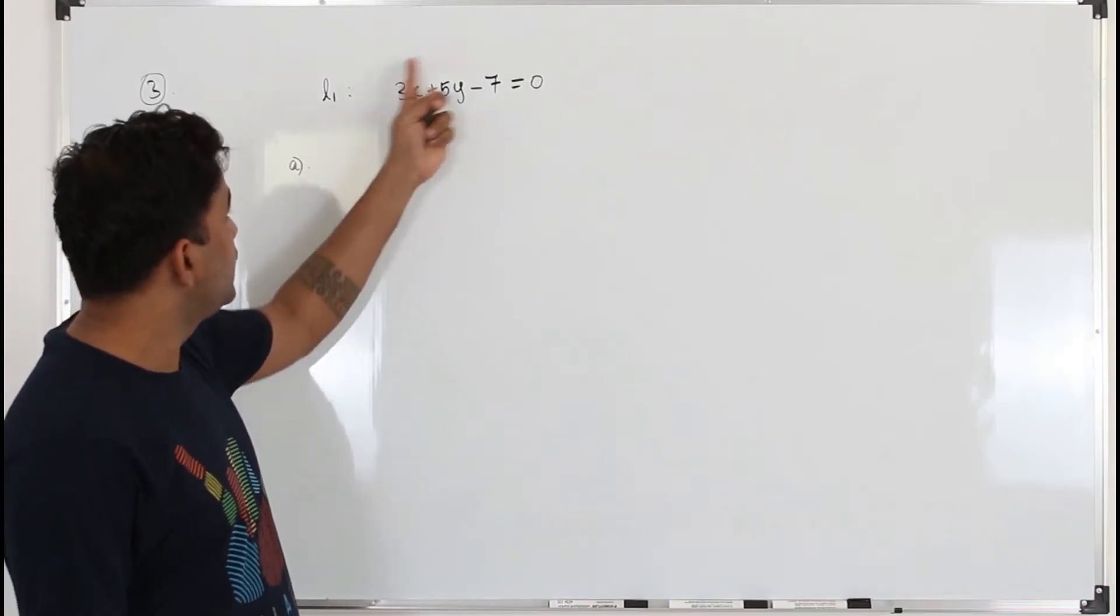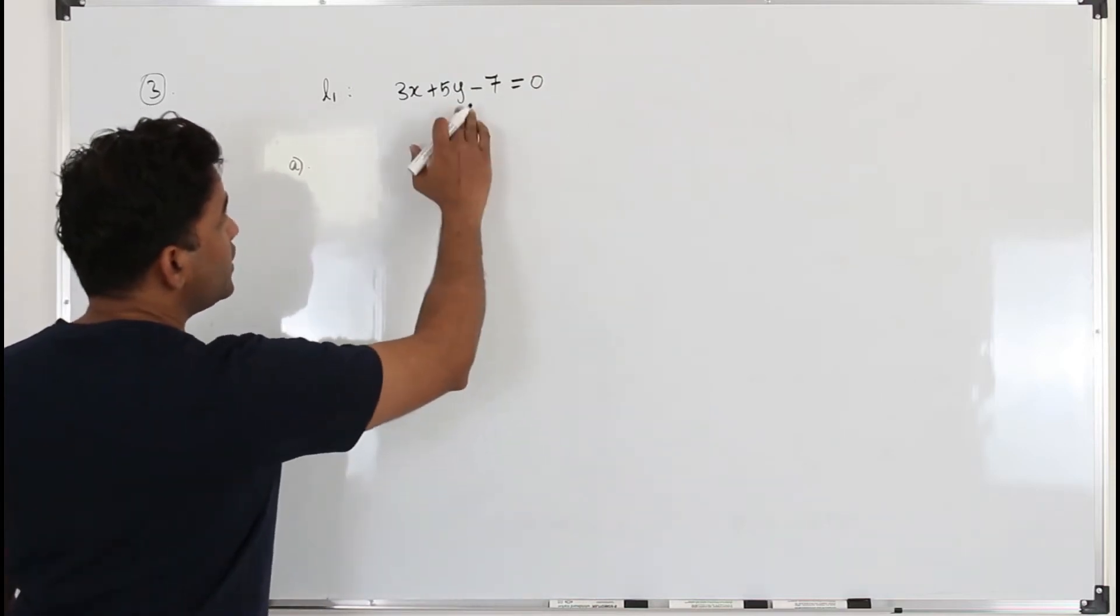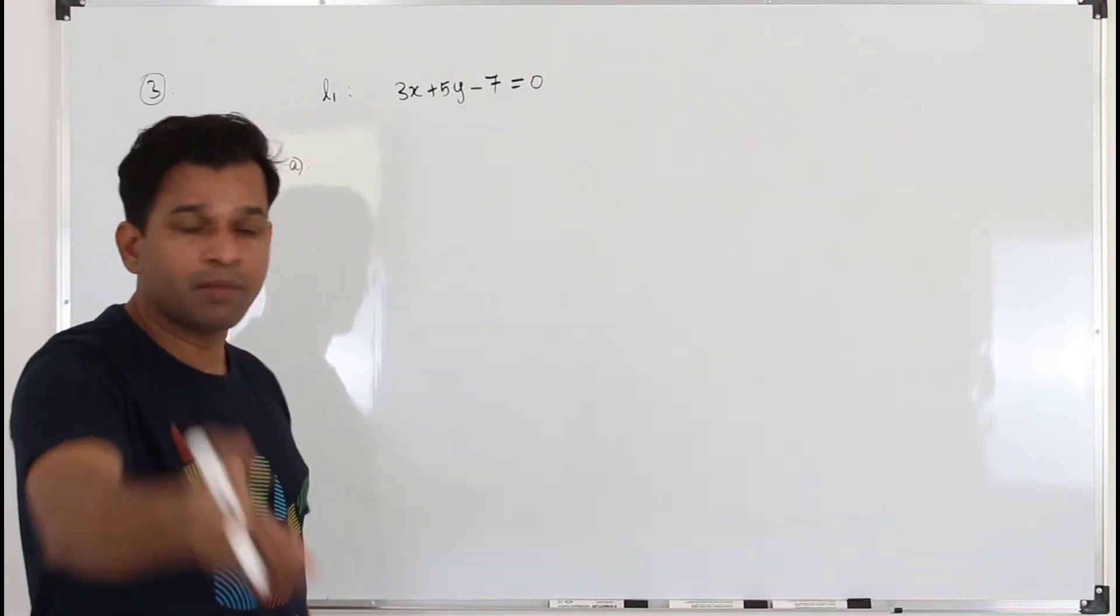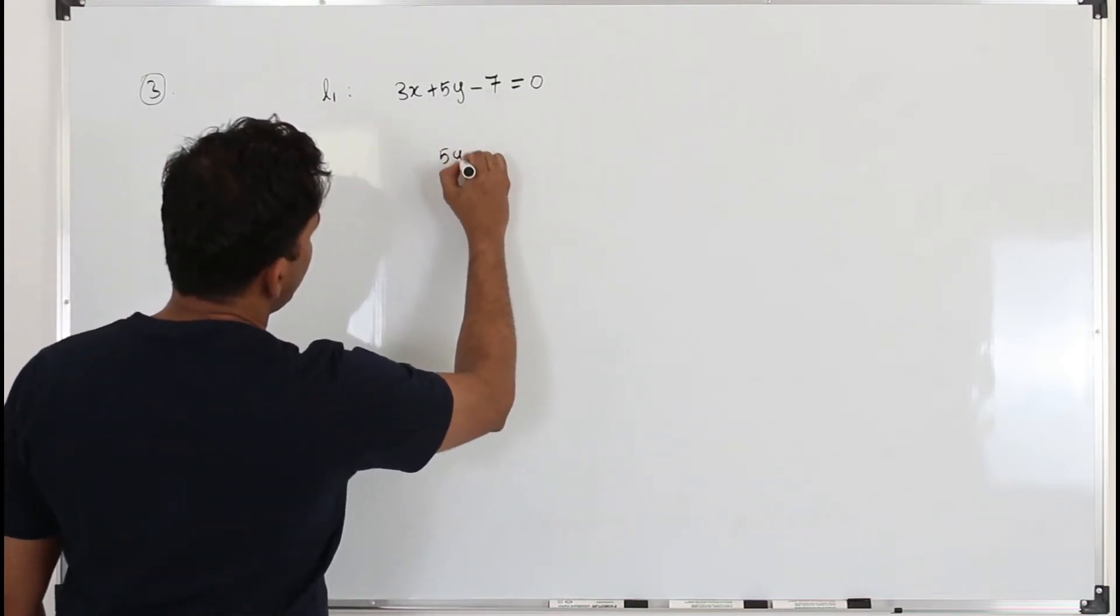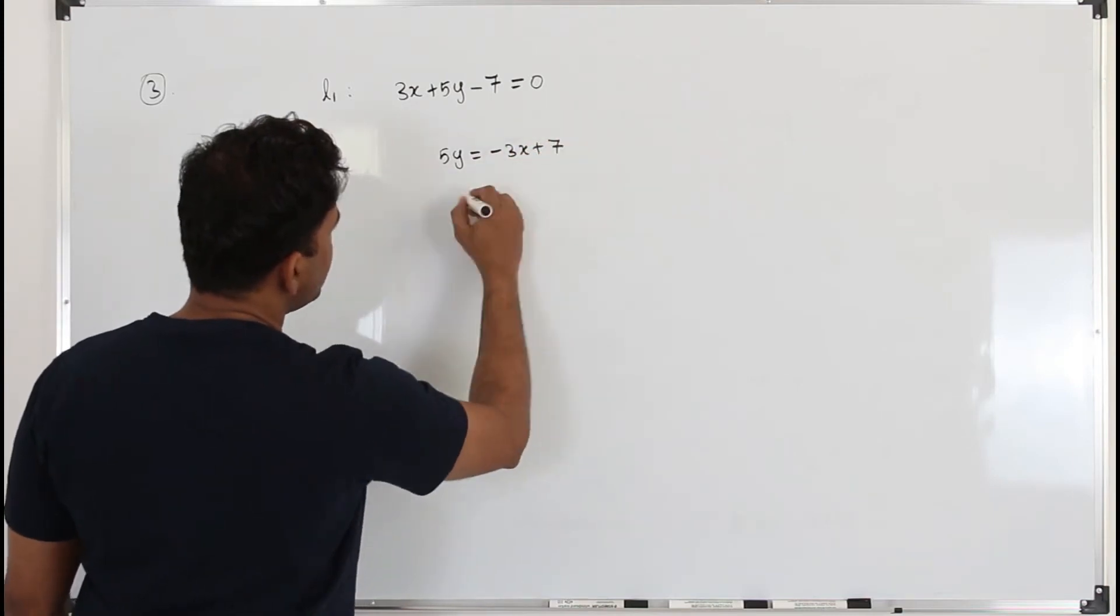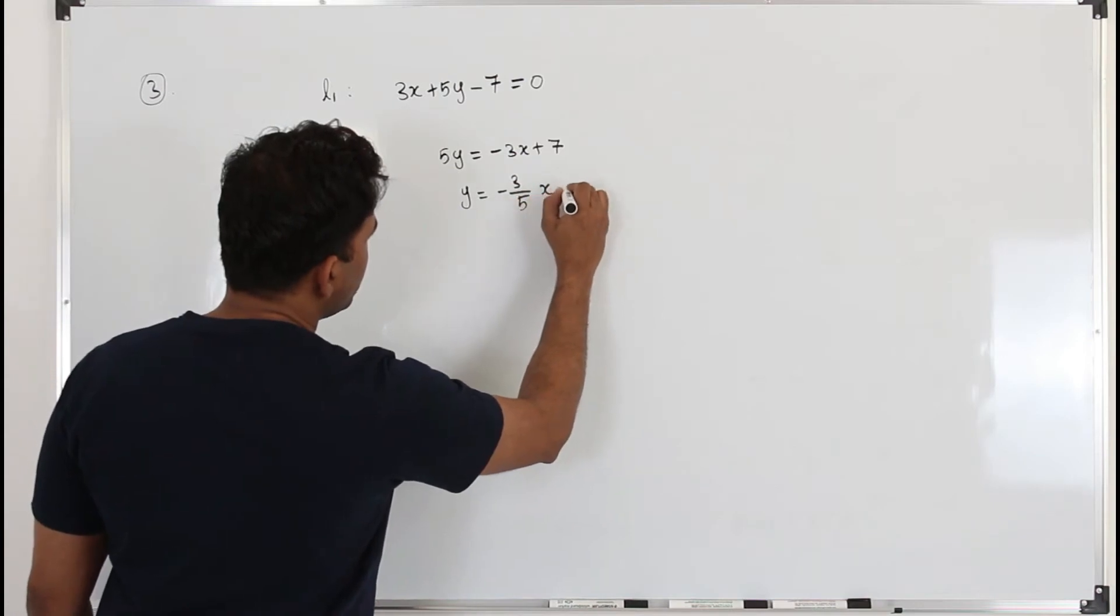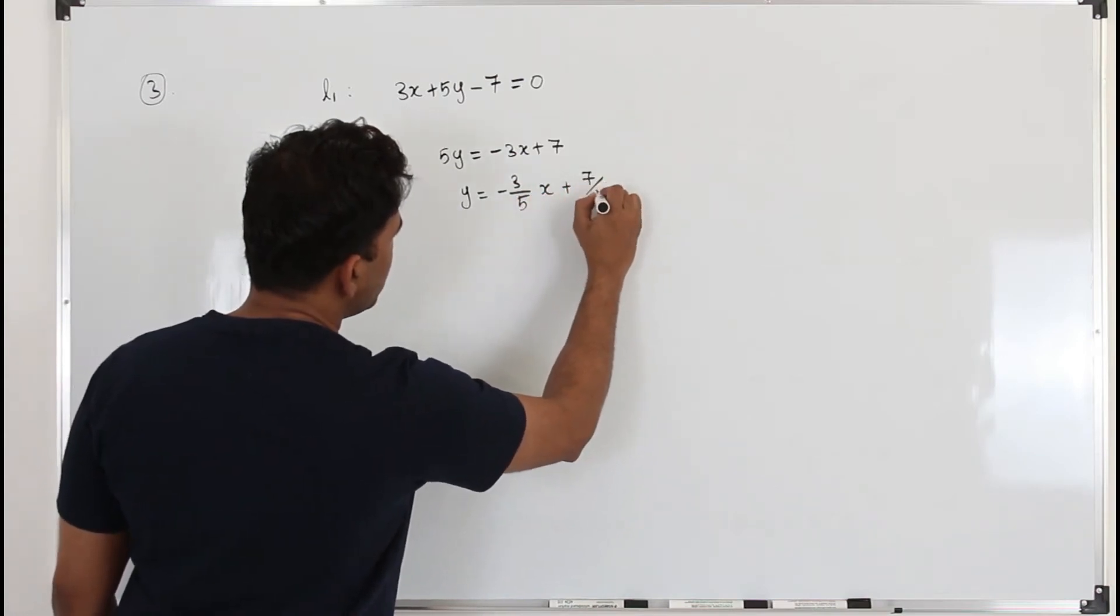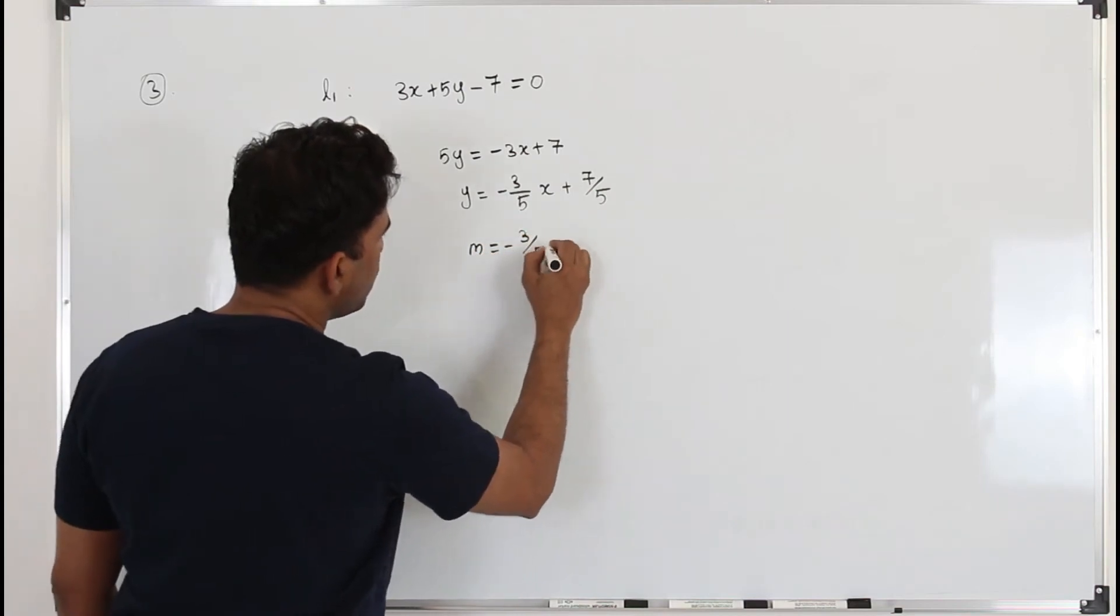Part A, we need to find the gradient of this straight line. So if you want to find the gradient, you need to write it in the form y equals mx plus c or make y as the subject. So 5y is negative 3x plus 7, divide everything by 5, negative 3 over 5x plus 7 over 5. So the gradient is negative 3 over 5.